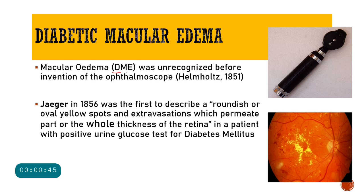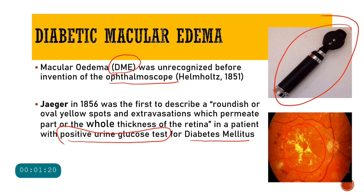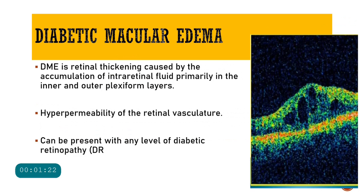Diabetic macular edema, also called DME, was actually unrecognized before the invention of the ophthalmoscope, which is used to look at the retina. Later, Jagger was the first to describe roundish or oval yellow spots seen in the retina, present in the whole thickness of the retina, and he correlated these yellowish spots to a patient of diabetes mellitus with a positive urine glucose test — marking the discovery of diabetic macular edema.